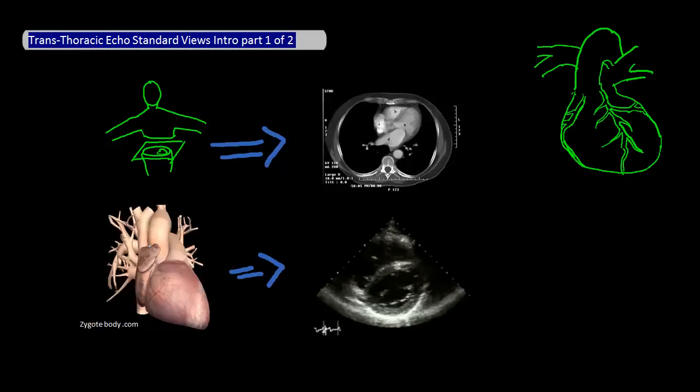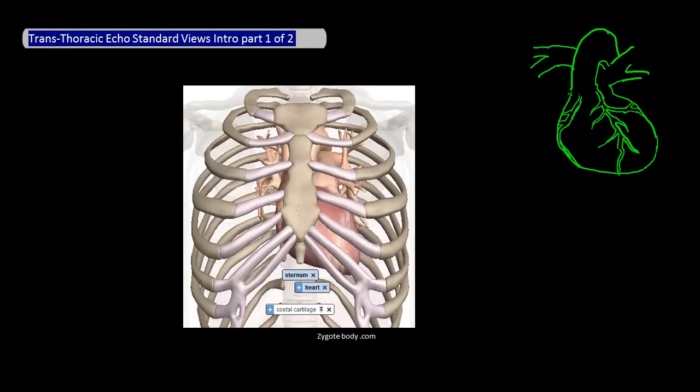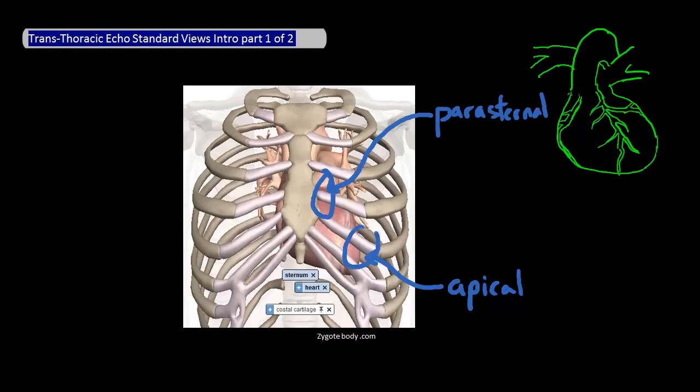The four standard locations in which the echo transducer can be placed include the parasternal position, which is normally between the third or fourth intercostal space at the left sternal border, the apical position, which is normally visualized at the point of maximal impulse or on the lateral side of the fifth or sixth intercostal space,